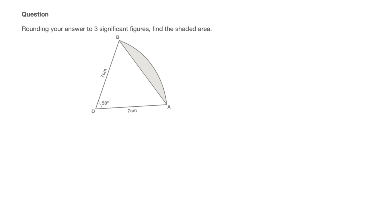In this video, I'm going to work through the exam-style question we see here. This question will teach us how to calculate the area of a circular segment. We're told to round our answer to three significant figures and find the shaded area. We're given an illustration showing a circular sector with a radius of seven centimeters and an angle at the center of 50 degrees. The shaded area we need to find corresponds to a circular segment.